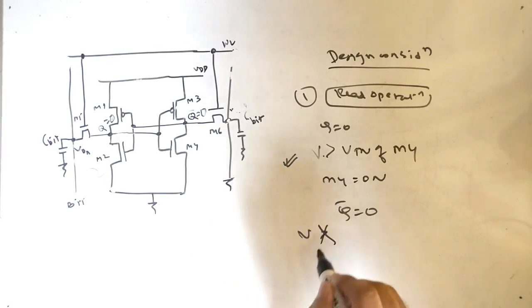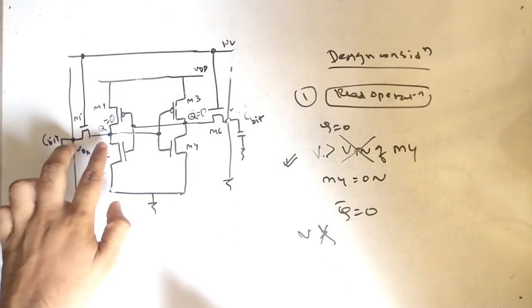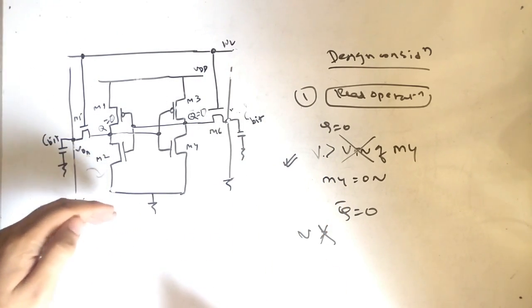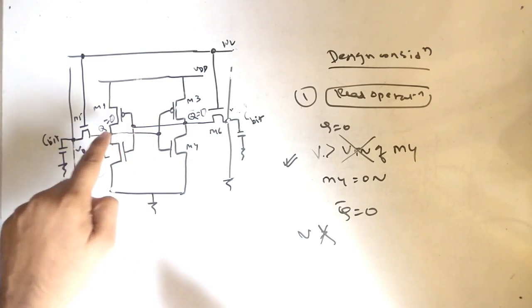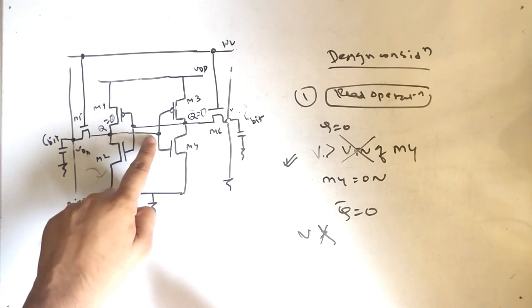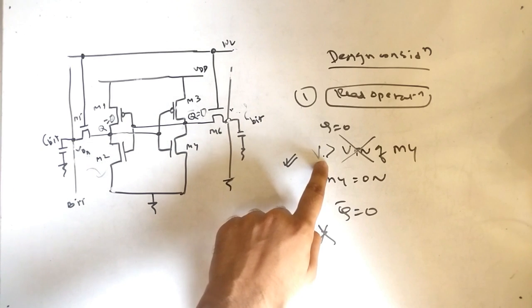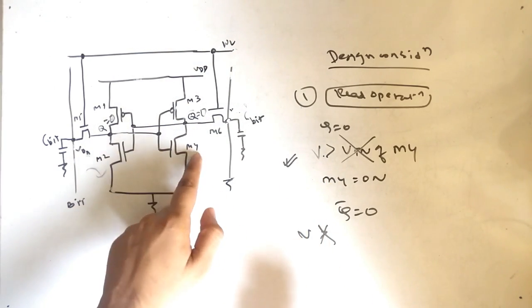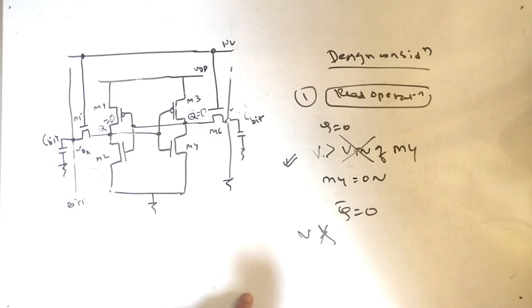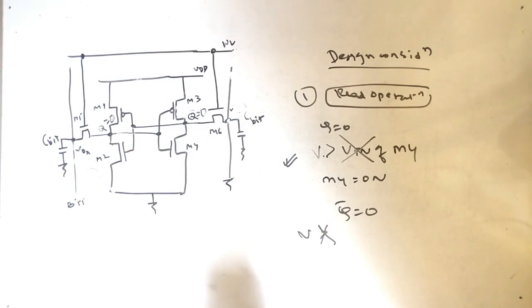You have to make sure that this condition is not true. During capacitor discharge, the voltage on the bit line will increase, and you must ensure that this voltage does not exceed the VTN of M4. If it exceeds the VTN of M4, M4 turns on, Q-bar becomes 0, and since Q is also 0, this creates a race condition — which is incorrect and will affect the system.